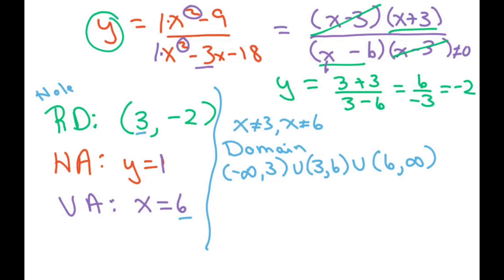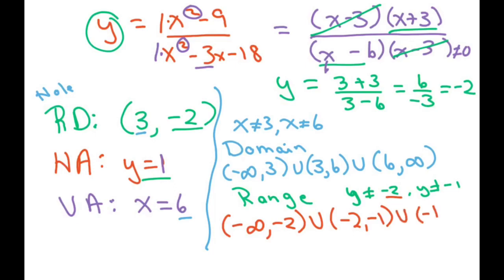So your domain is your x values. Now your y values is your range. So we have negative 2 and y equals 1. So basically, y cannot be negative 2, and y cannot be 1. And sometimes you could just write it like that. But if you're going to write it in interval notation, you're going to start with a smaller number and go from negative infinity to negative 2, or negative 2 to 1, or 1 to infinity.